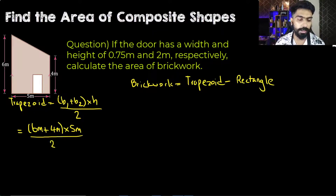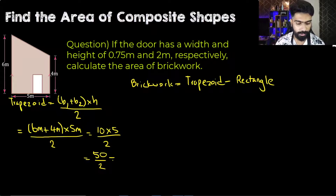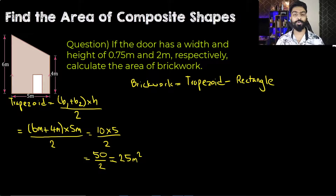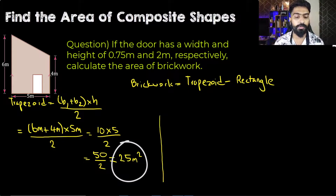Six plus four gives us 10, multiplied by 5 over 2, which equals 50 over 2, which is 25 meter squared. So 25 meter squared is the area of the wall, which is in the shape of a trapezoid.